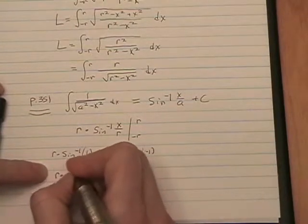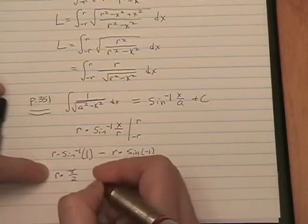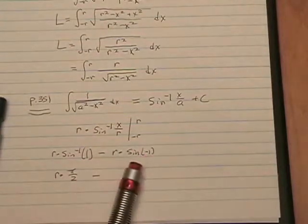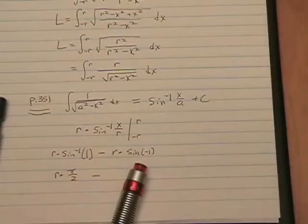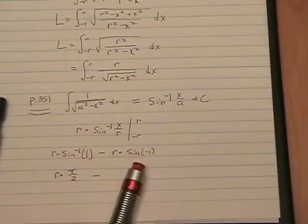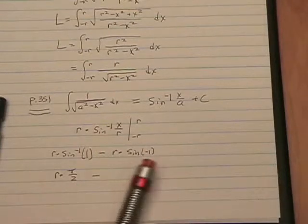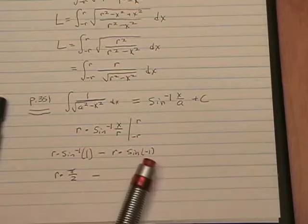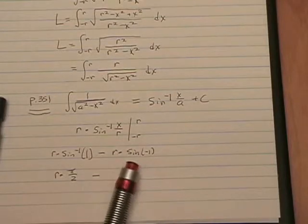So this is r times pi over 2, minus, same thing over here, what angle gives us a sine of negative 1? A y value of negative 1 if you're on the unit circle, and that angle is negative pi over 2.